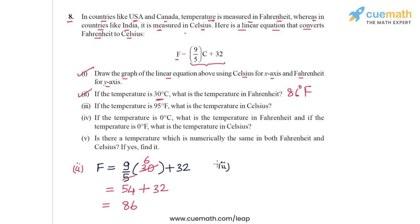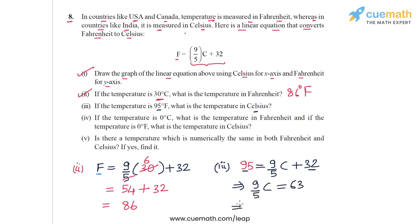Part 3 asks: if the temperature is 95°F, what is the temperature in Celsius? We substitute F = 95 into the equation: 95 = 9/5 × C + 32. Subtracting 32 gives 9/5 × C = 63, so C = 63 × 5/9. Since 63/9 = 7 and 7 × 5 = 35, we get C = 35. Therefore 95°F equals 35°C.